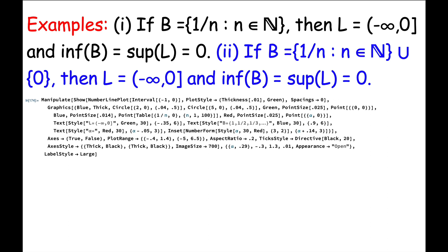We're going to consider S to be the set of real numbers, and here in Example 1, let B be the set of all numbers 1 over n as n ranges over the natural numbers. So this includes 1, 1/2, 1/3, 1/4, 1/5, etc. Then L, the set of all lower bounds of B, will be the set of all numbers less than or equal to 0 — the interval from negative infinity to 0, including the right endpoint 0. And we can also say that the inf of B and the sup of L are the same, and they are both the number 0. In the second example, I just add one more point — the number 0 — to the set B. The set L stays the same; it is still all the numbers less than or equal to 0, and the inf of B and the sup of L are still also 0.